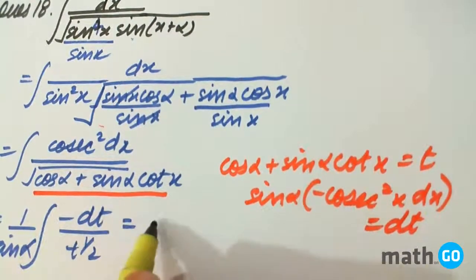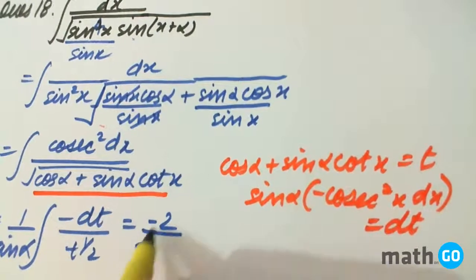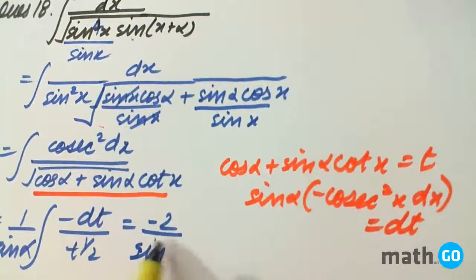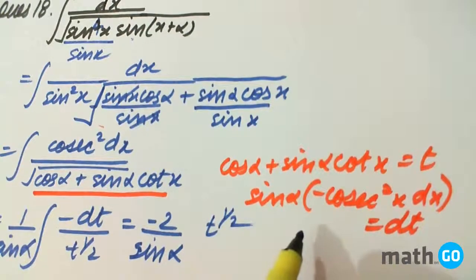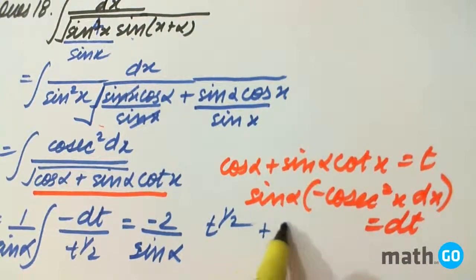So it will be like minus 2 upon sin alpha and t to the power 1 by 2 plus c.